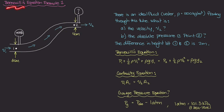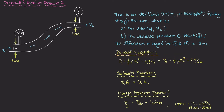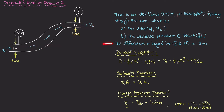Welcome to our first example on Bernoulli's equation. In the last few videos we've been deriving Bernoulli's equation, and in this video I want to do a pretty typical example so we understand how to use this equation. Here we have a pipe going from point 1 to point 2, with an elevation difference of 2 meters between them, and through this pipe we have water flowing, modeled as an ideal fluid.